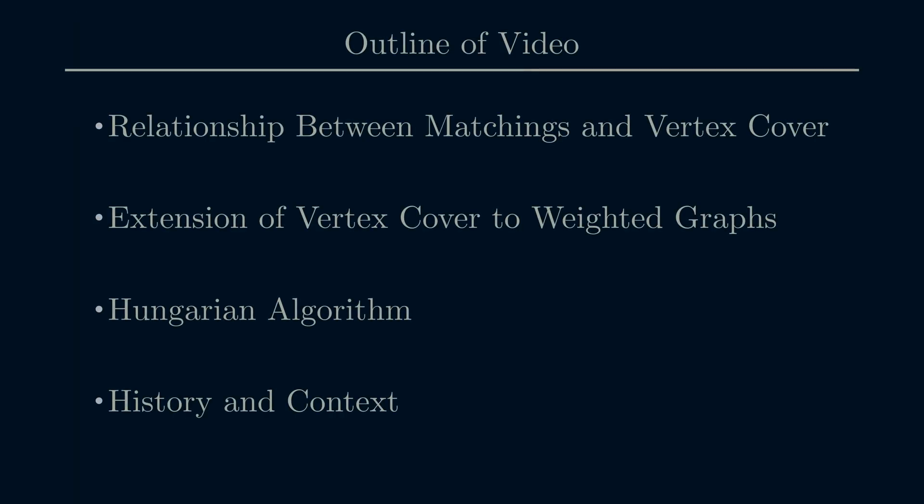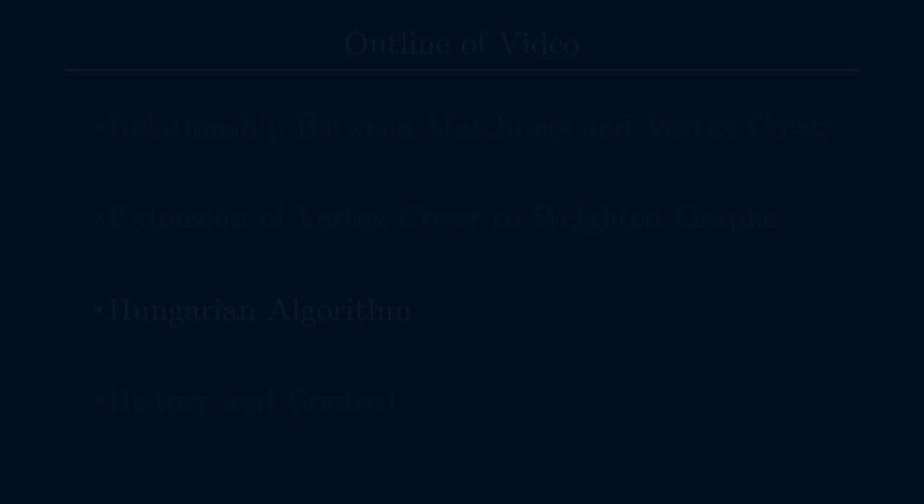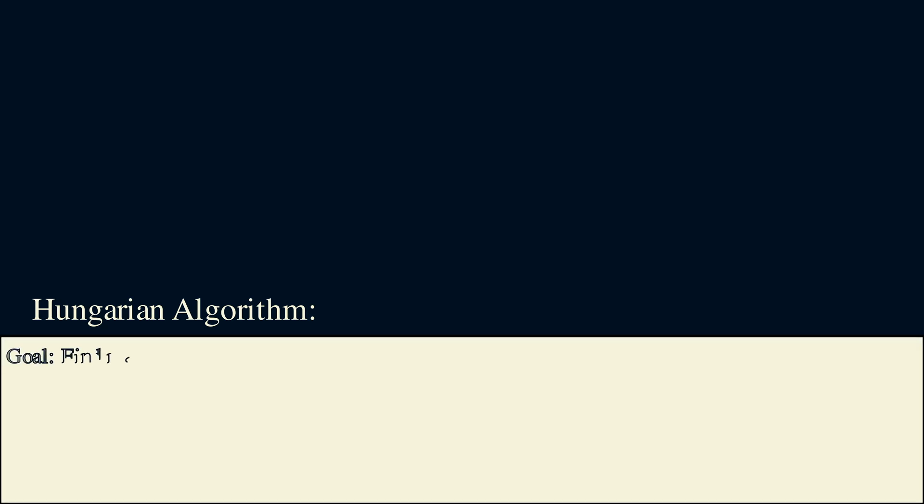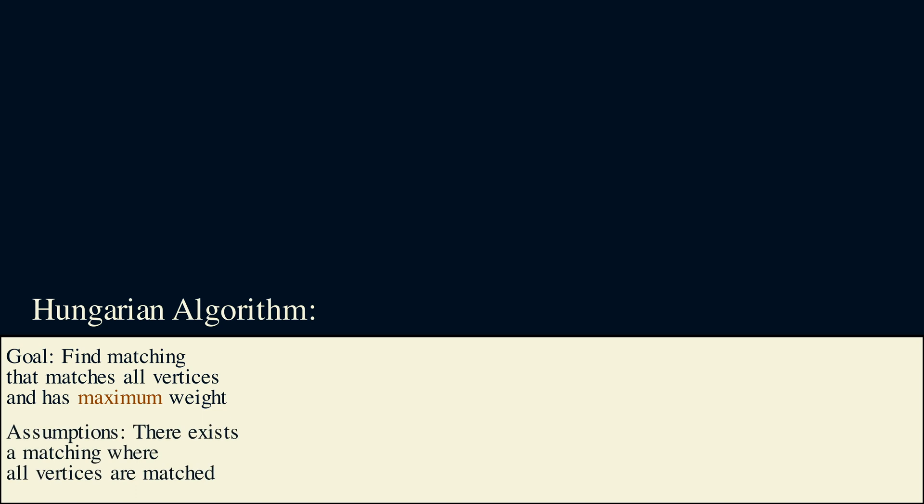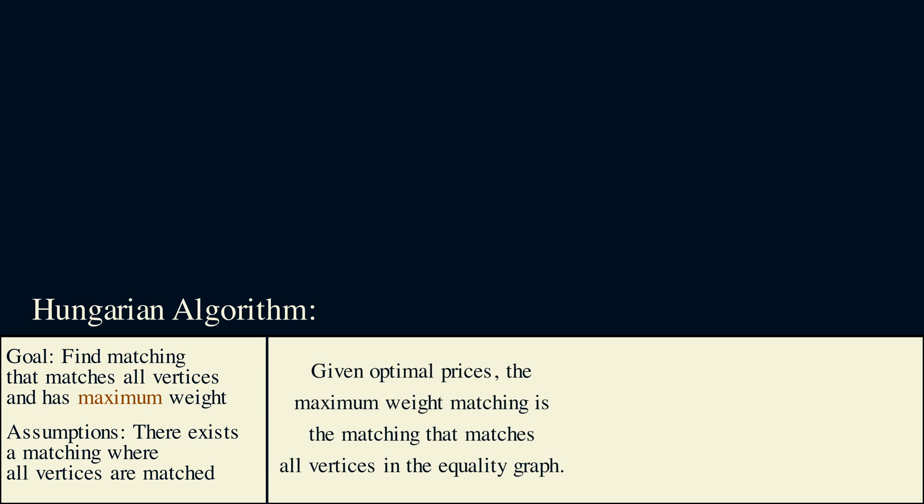We now have all of the parts needed to talk about the Hungarian algorithm. Finally, it's time to talk about the Hungarian algorithm. Remember that our goal is to find a matching that matches all vertices and maximizes or minimizes the total edge weight. We'll focus on maximizing, but minimizing is very similar and requires just a few changes. We assume that edge weights are non-negative and there exists a matching that matches everyone. We can always transform a graph into one that satisfies these assumptions. I'll leave a reference if you want more details below.